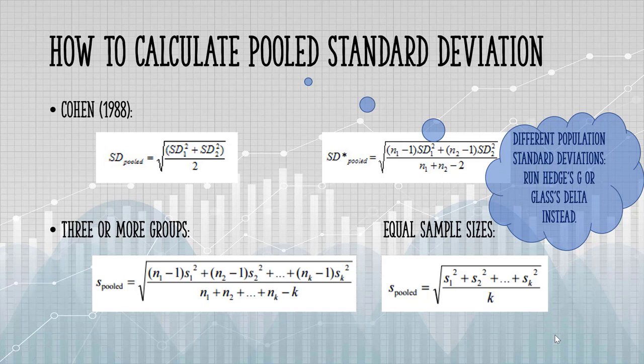If they are not the same, then it's a violation of the assumption of homogeneity of variances. If your standard deviations are different, you'll want to run Hedges-g or Glass's delta instead.